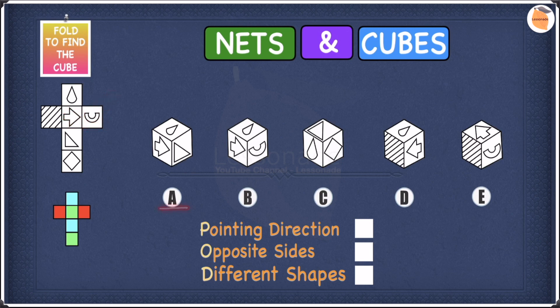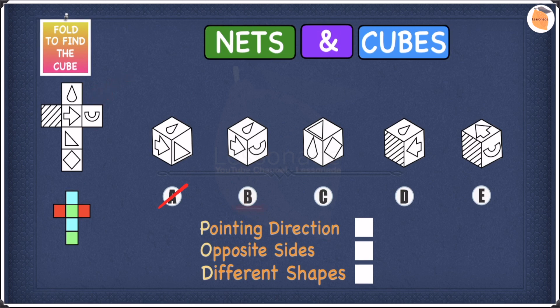In A, the arrow is pointing towards this triangle which is the wrong shape, so therefore we can cross off A. We want it to point towards this semicircle and nothing else. In B, the arrow is pointing towards the semicircle which is the right shape, so we can keep B.